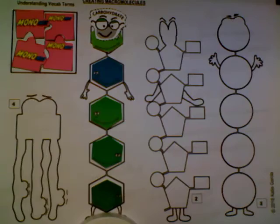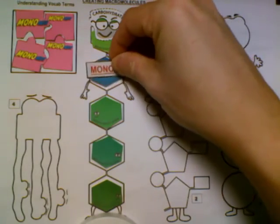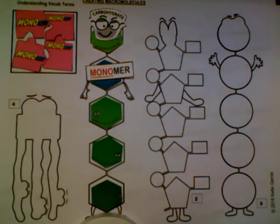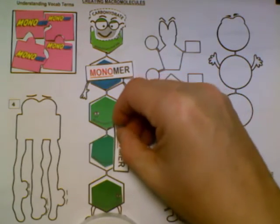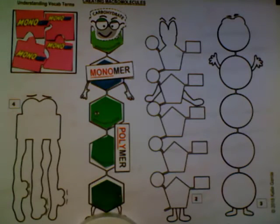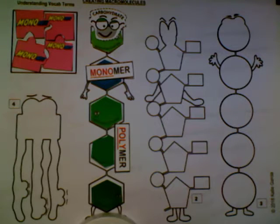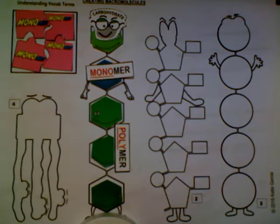A single monosaccharide is an example of a monomer, and then our chain of monosaccharides together are going to build our polymer. Feel free to pause the video to begin to build your first macromolecule. When you're ready, we can move on to our next one.